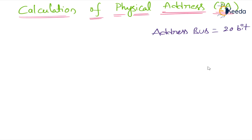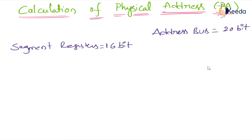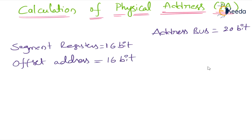What size are our registers? General purpose registers, segment registers, instruction pointer, offset address — all of them are 16 bit. The size of all segment registers is 16 bit. The offset registers — instruction pointer, stack pointer, base pointer — are also 16 bit.